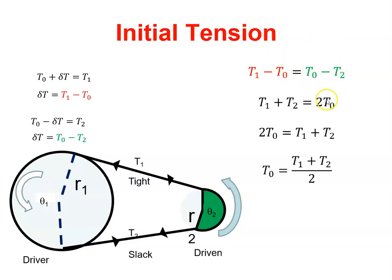So when I bring this across, I get two T0, and this becomes T1 plus T2. And I can then say that the initial tension is T1 plus T2 over 2. Okay, it's the average tension of both of those, right.